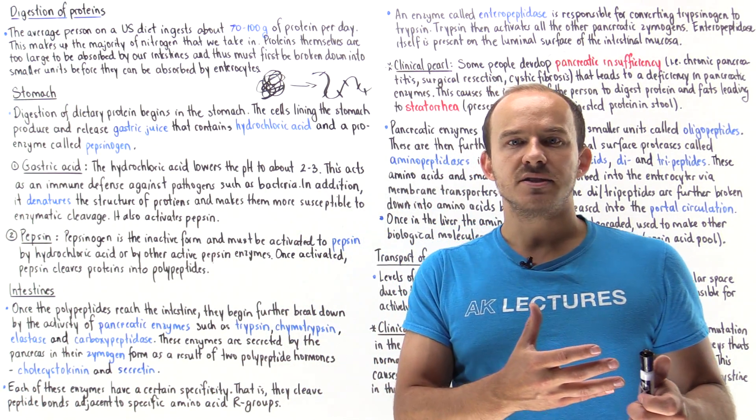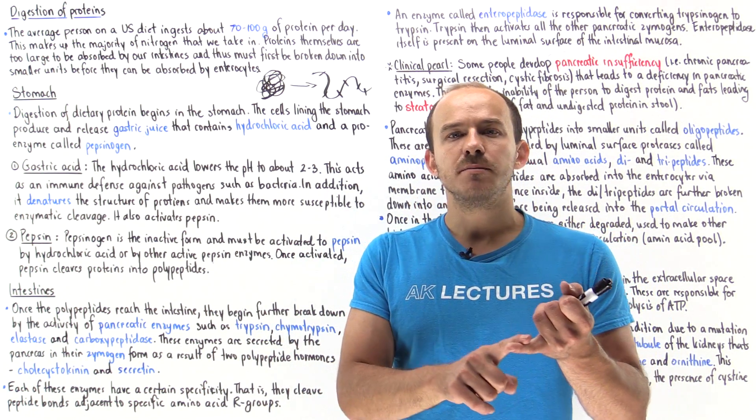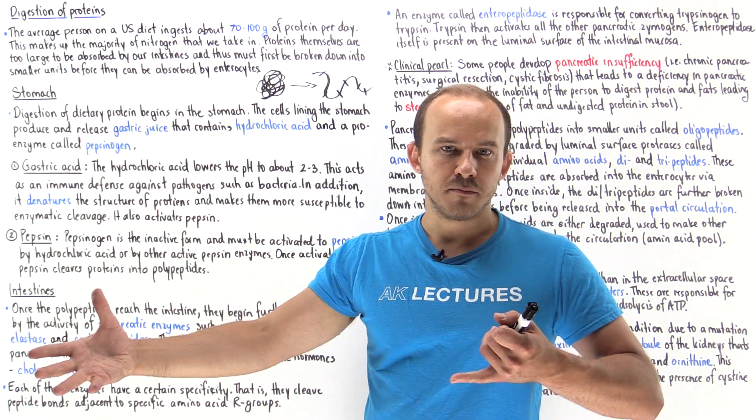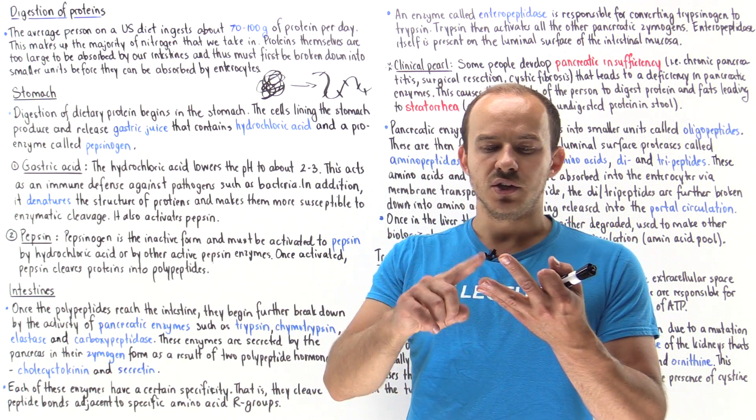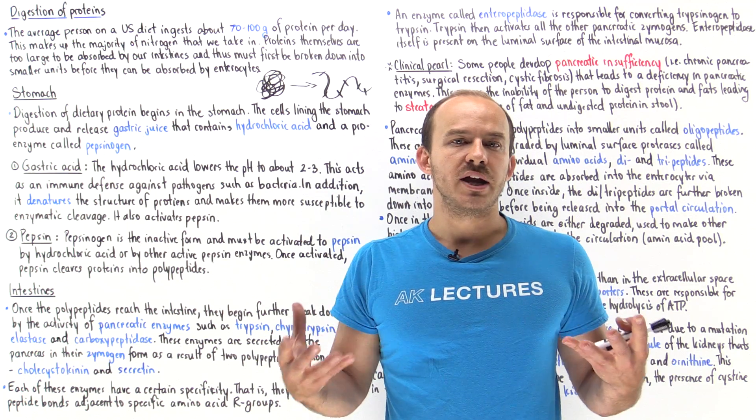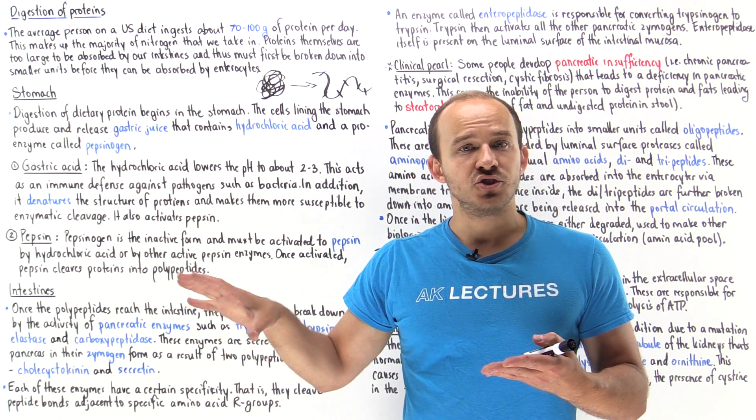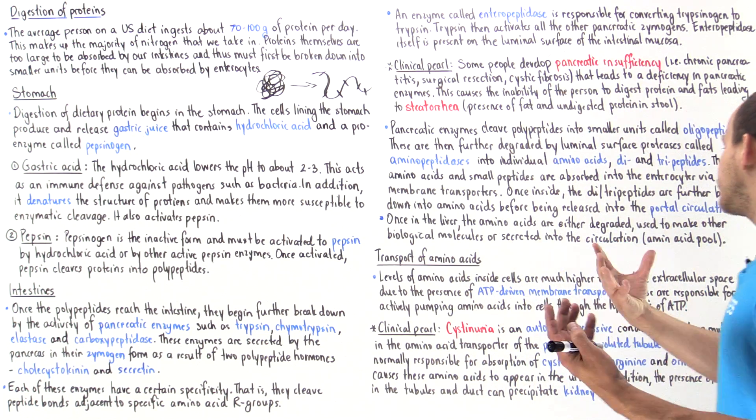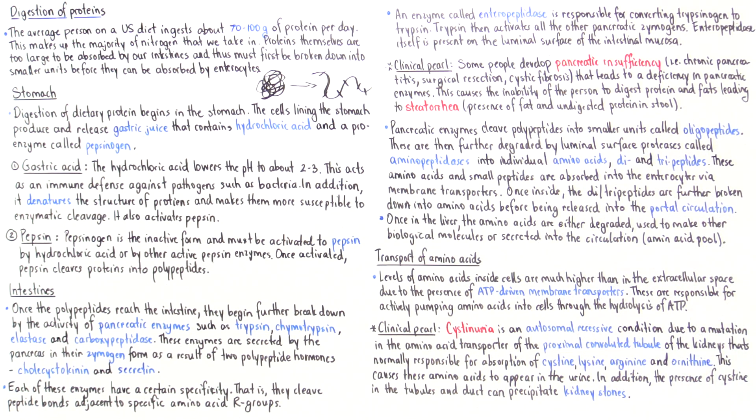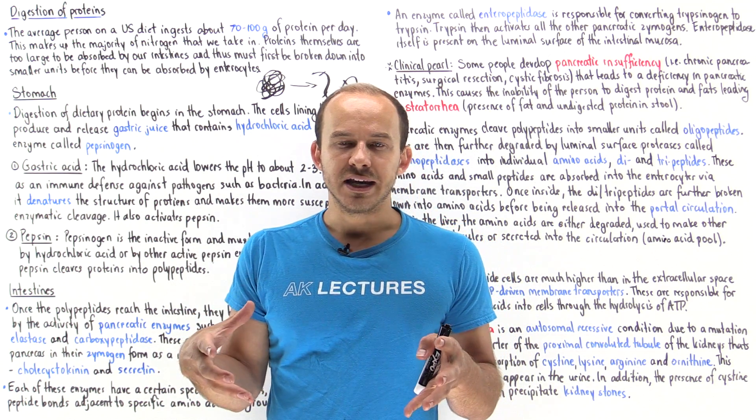The portal circulation carries the amino acids to the liver. In the liver, we can either use amino acids to help form other biological molecules, or we can use amino acids for other purposes, or if we don't need them, we break them down. But some of those amino acids are released into the general circulation, and that's what makes up that amino acid pool that we talked about in the previous lecture. So I want to finish off by talking about the transport of amino acids in our body.